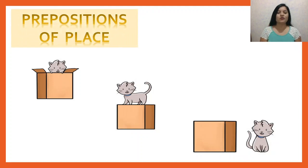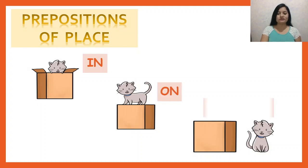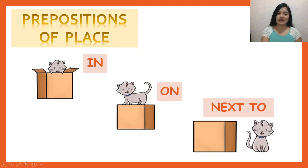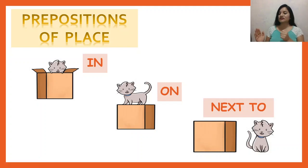Now, today we also need to know the meaning of some prepositions of place. We are going to start with three today; next class we will continue with others. For today we have: in, on, and next to. You have a box and a cat. In this picture, the cat is in the box — 'dentro de'. In this picture, the cat is on the box. And finally, the cat is next to the box.